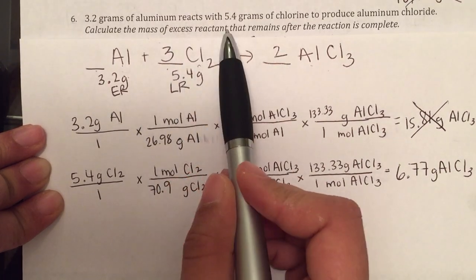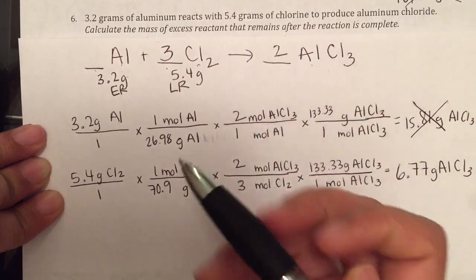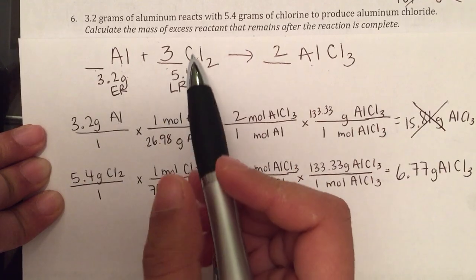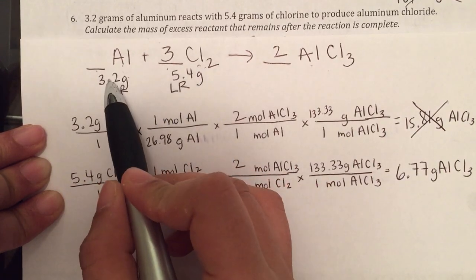So we want to know how much of our excess reactant remains after the reaction is complete. Now we need to figure out how much of this are we actually using. So we need to go from grams of chlorine to grams of aluminum.